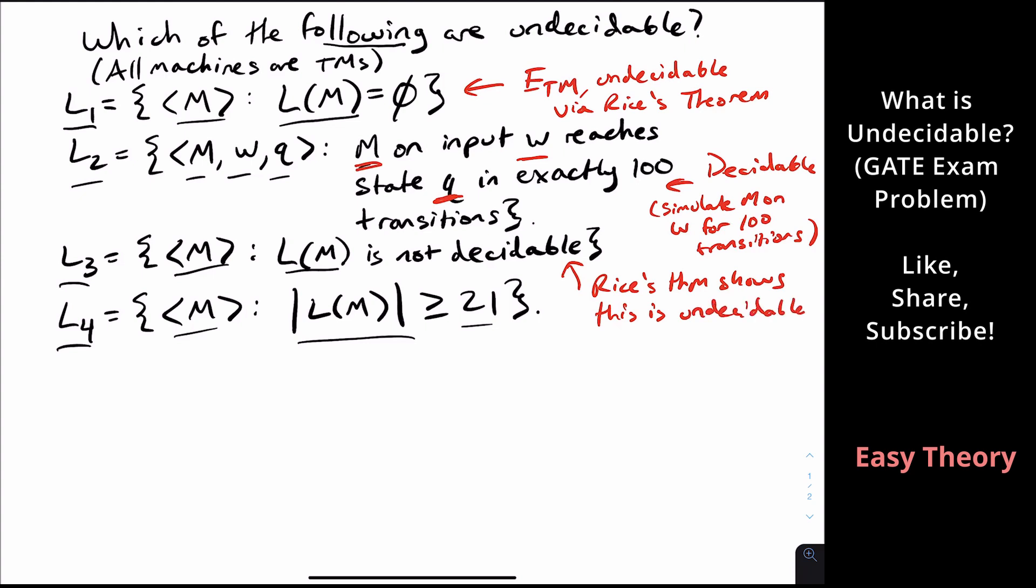So we would need to show that it's a property of Turing machine languages. And it certainly is. The only criterion for whether you're in or out the language depends on the language and not like the number of states you have or anything. So is it a non-trivial property? Well, yes, it is.